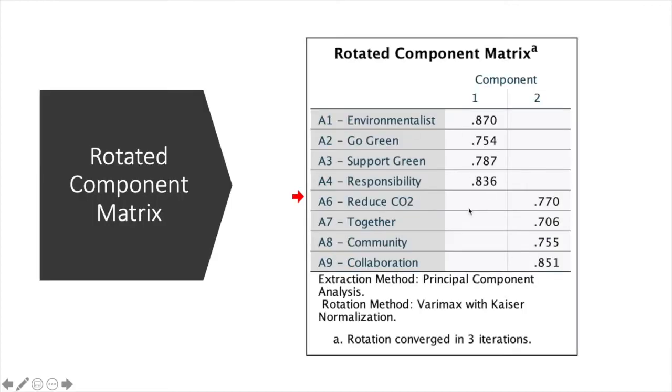Once we have suppressed the loadings which were not useful to us based on the sample size, you can see in this table now it looks much more neat. We have two factors and all the items are grouped under those particular two factors. Now we can name the factors. The first factor, if we look into the items: environmentalist, Go Green, Support Green, Responsibility.